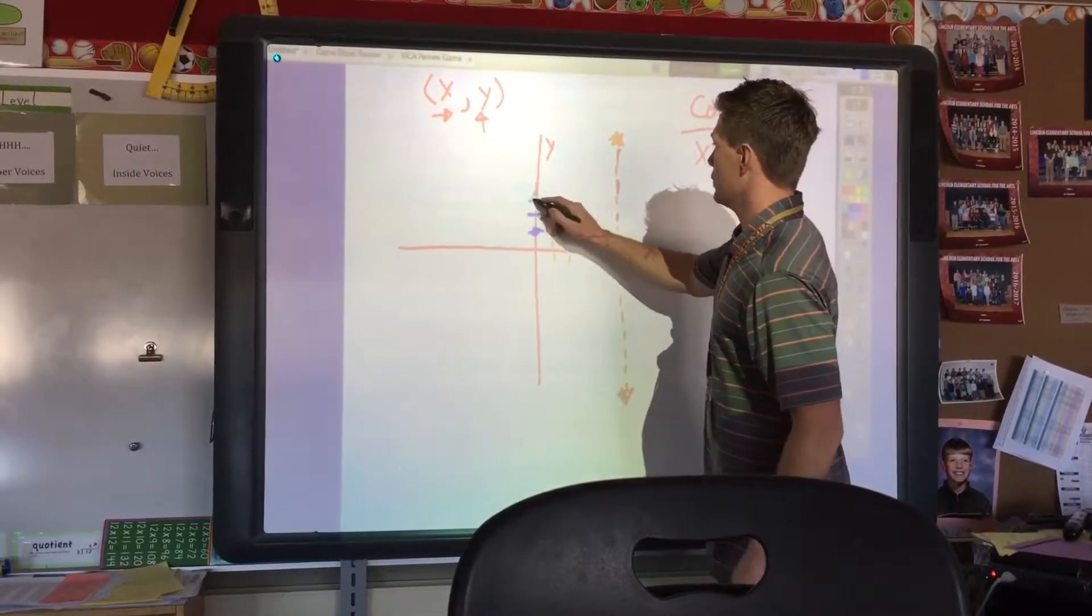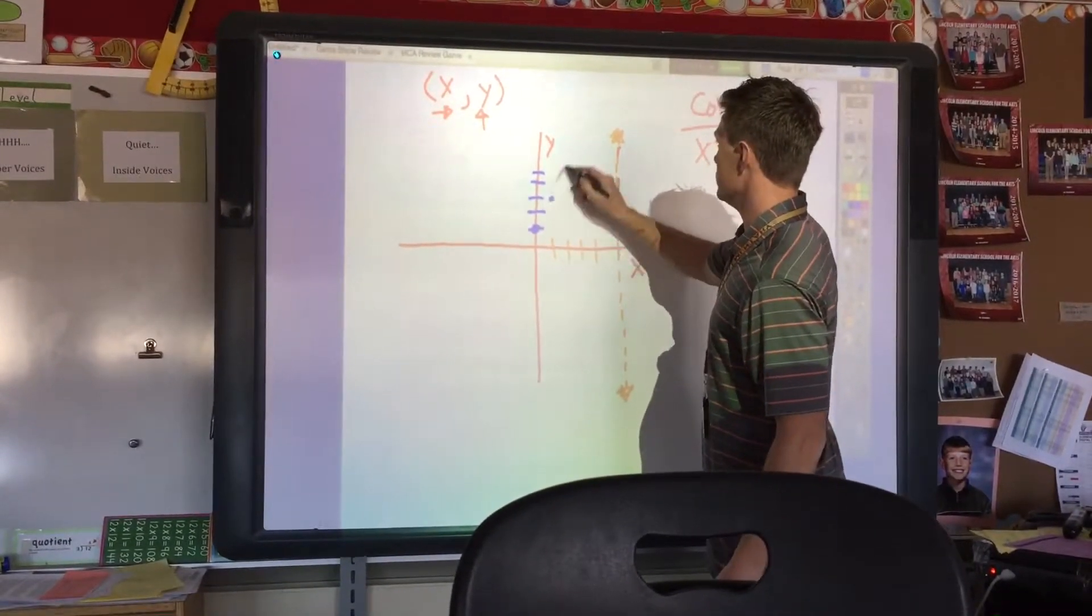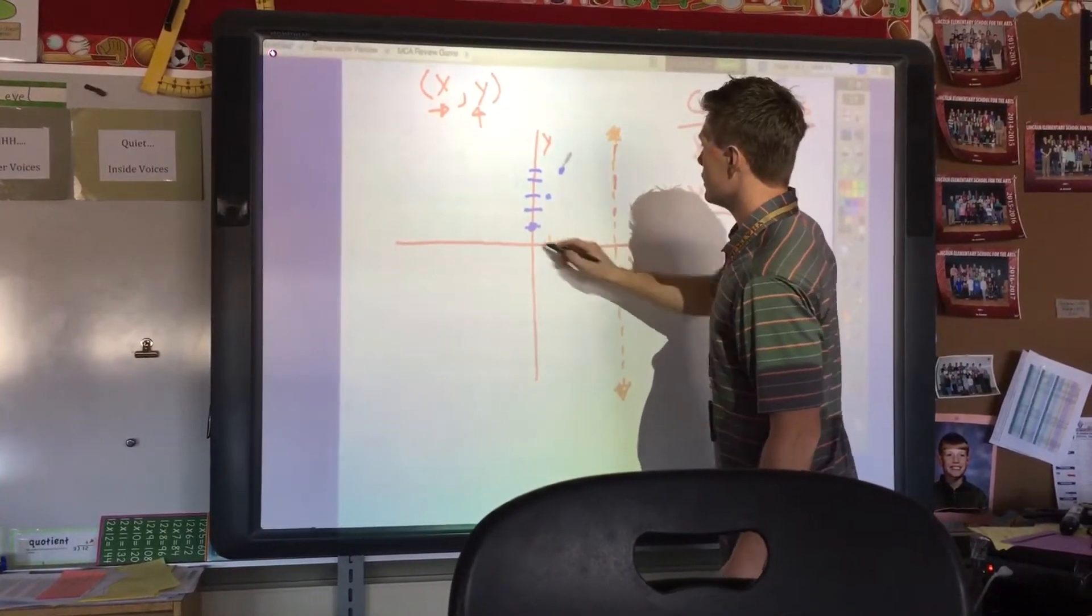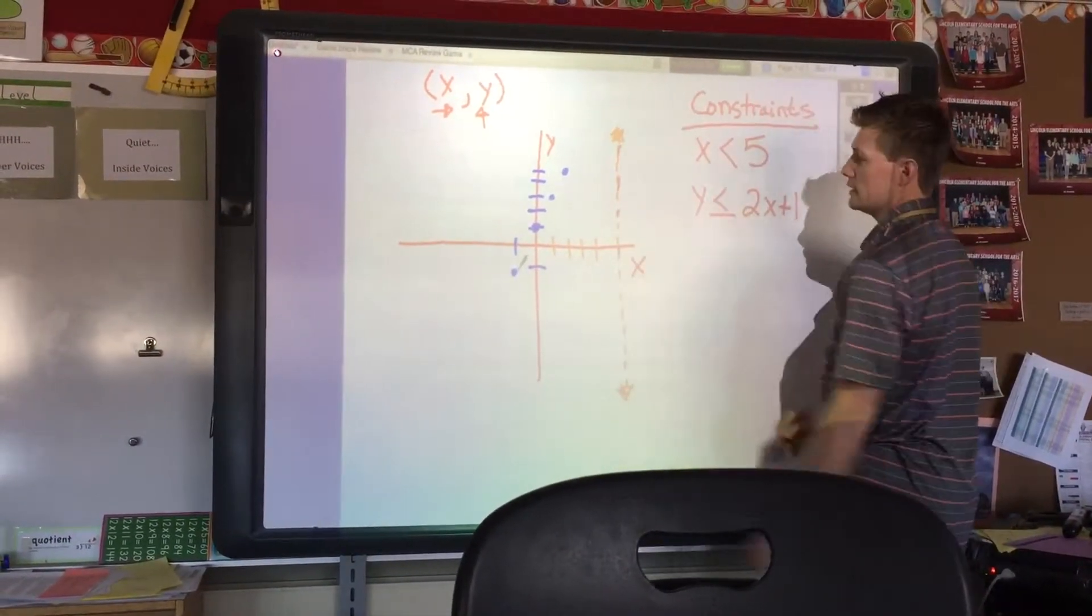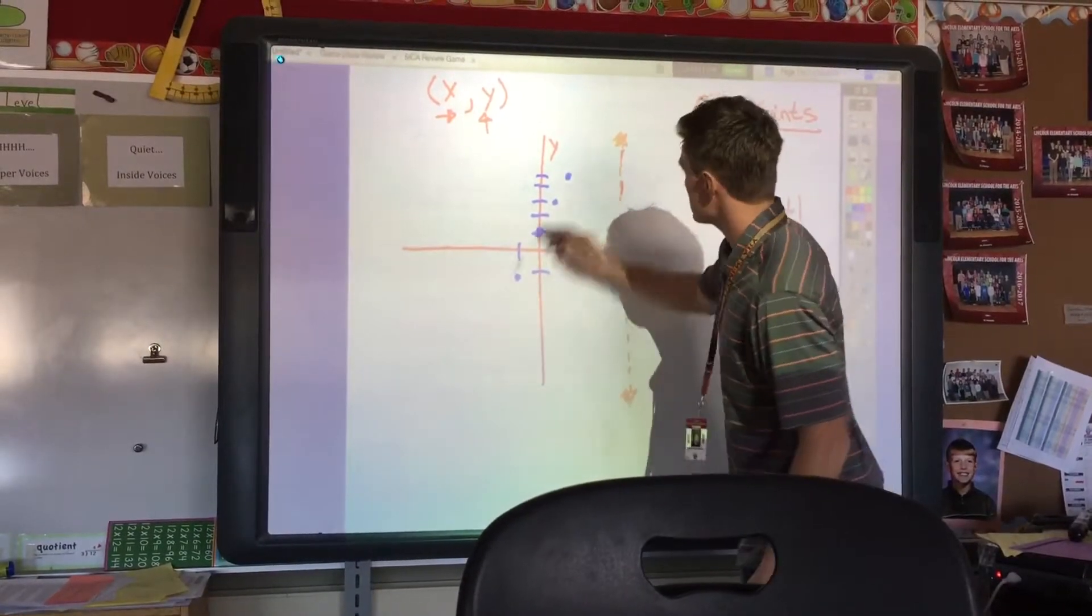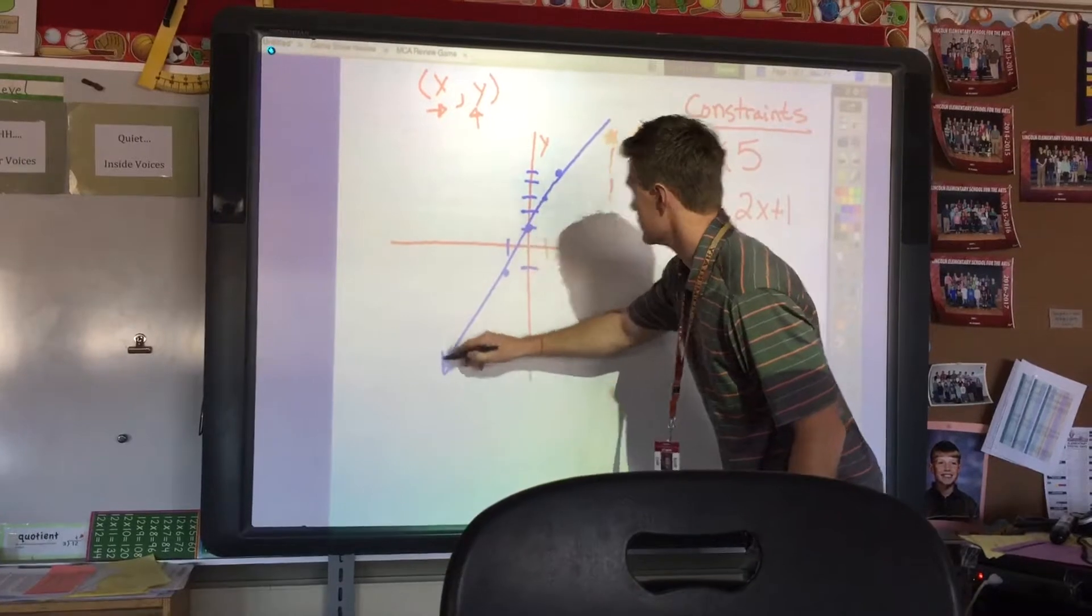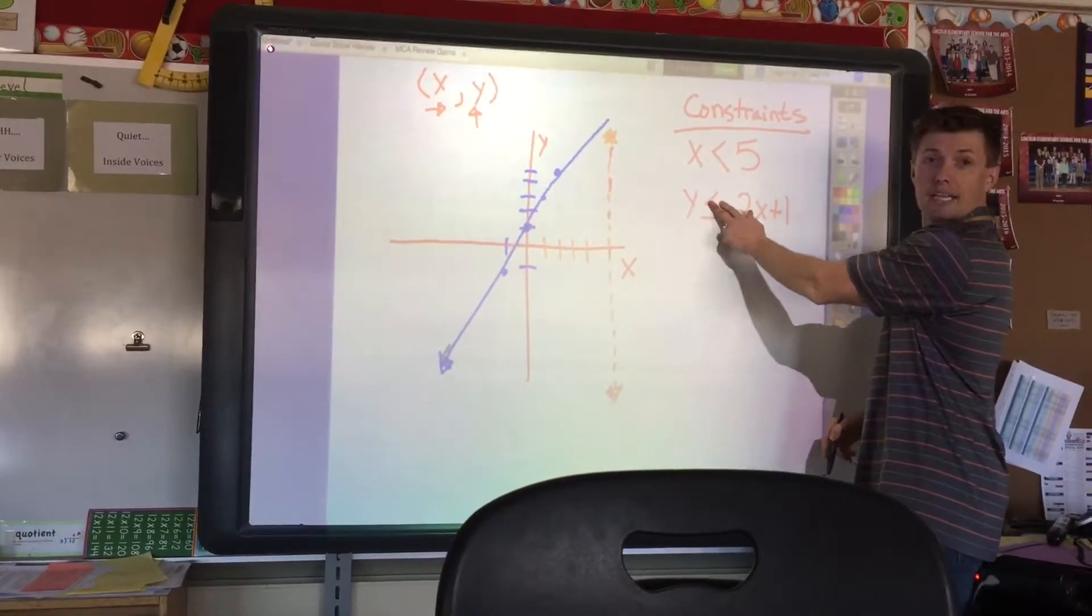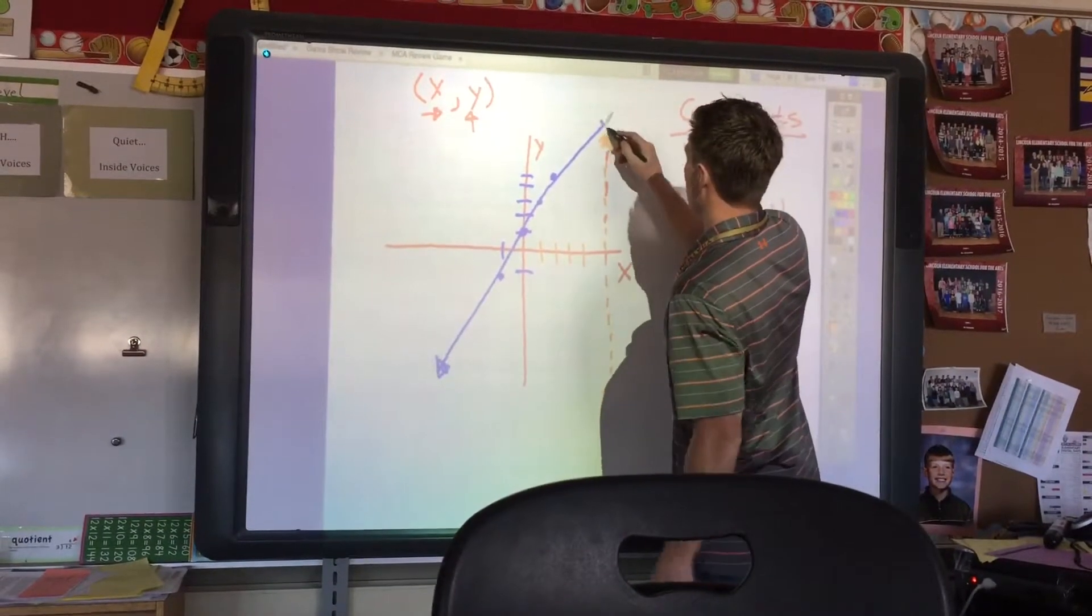I can either plot knowing I'm going up 2 over 1, up 2 over 1, down 2 over 1. And I can draw a line here. And this is going to be a solid line. And the reason it's solid is it simply says less than or equal to, which that equal to means it's going to have a solid line.